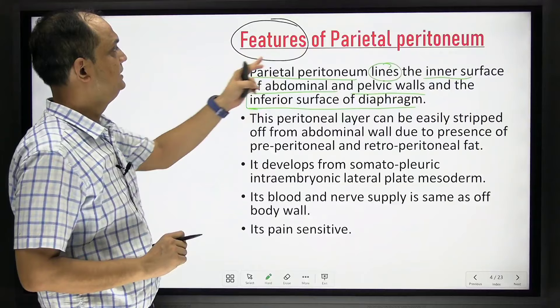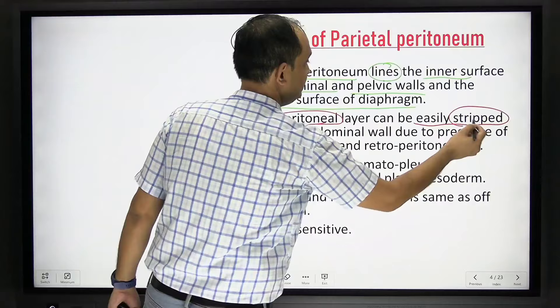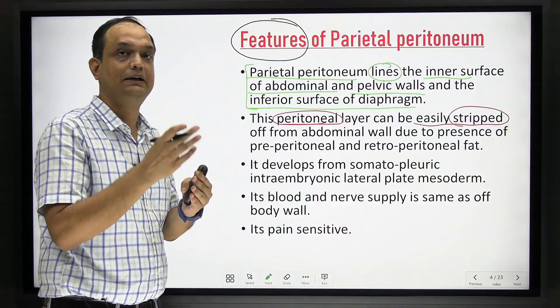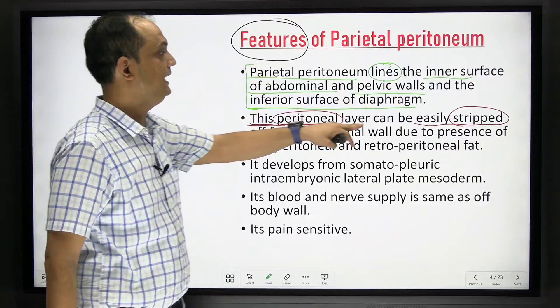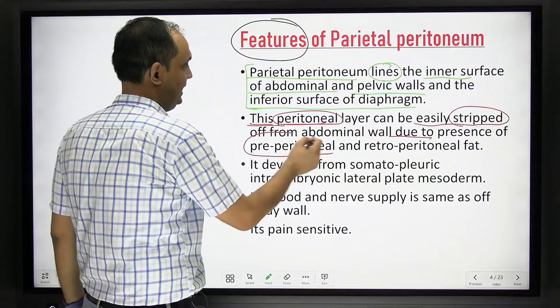The parietal peritoneal layer can be easily stripped off from the body wall because between the peritoneum and the abdominal wall there is fatty tissue. The parietal peritoneum can be easily stripped from the inner side of your body wall because of the presence of pre-peritoneal fat anteriorly and retro-peritoneal fat posteriorly.